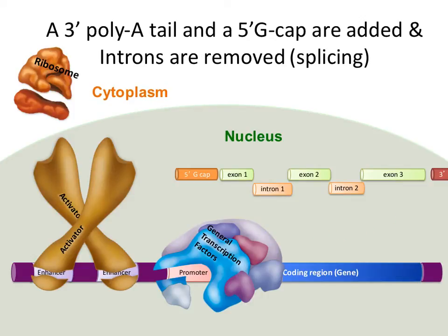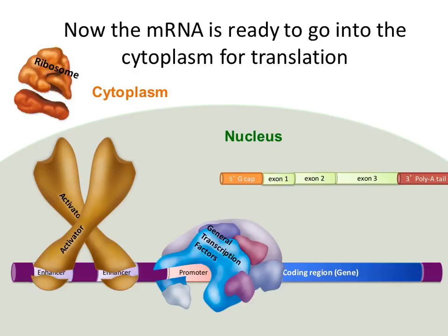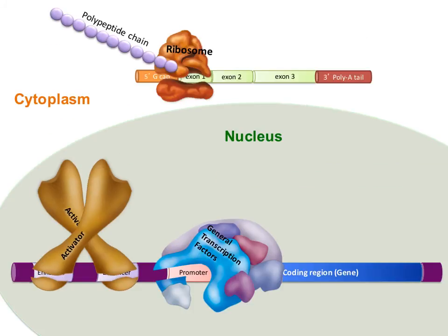Those modifications include removing the introns, adding a 5' G cap, and a poly-A 3' tail. The poly-A tail is a set of multiple adenines added to the 3' end of the transcript, and a guanine is added to the 5' end of the RNA transcript. All the introns are removed, and then the exons are glued back together. So here we've added the poly-A tail, the 5' G cap, and joined the exons — now this is the messenger RNA that is ready for translation.